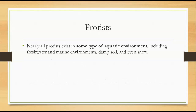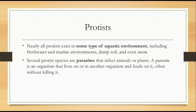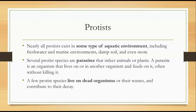Nearly all protists exist in some type of aquatic environment — fresh water or marine environments, damp soil, even snow. Several protist species are parasites that infect animals or plants. A parasite is an organism that has to live on or in another organism and feeds off of it, and often it doesn't kill it. A few protist species live on dead organisms or their wastes and contribute to their decay, so they're decomposers.